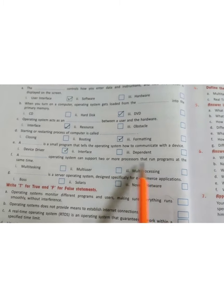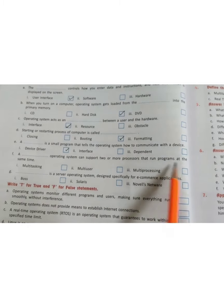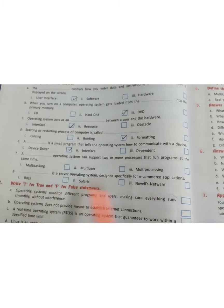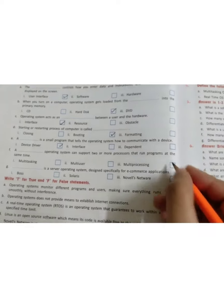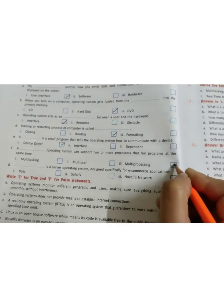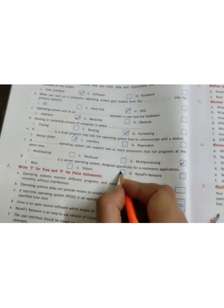A dash operating system can support two or more processors that run programs at the same time. The answer is multiprocessing. Dash is a server operating system designed specially for e-commerce applications. Answer is Solaris.